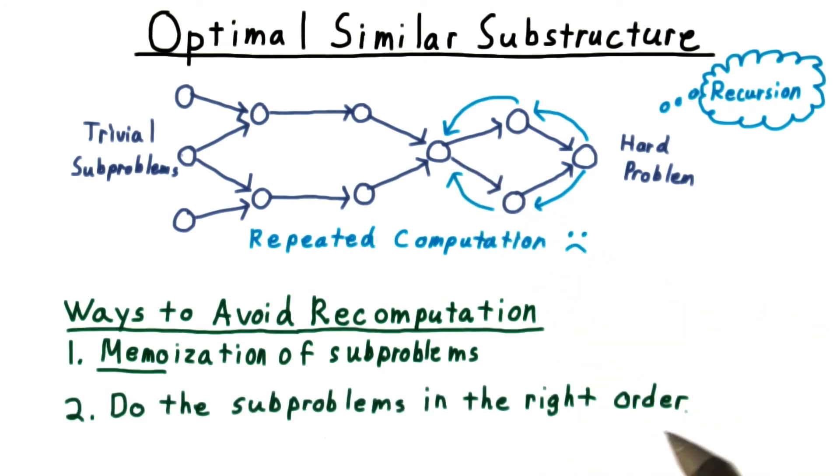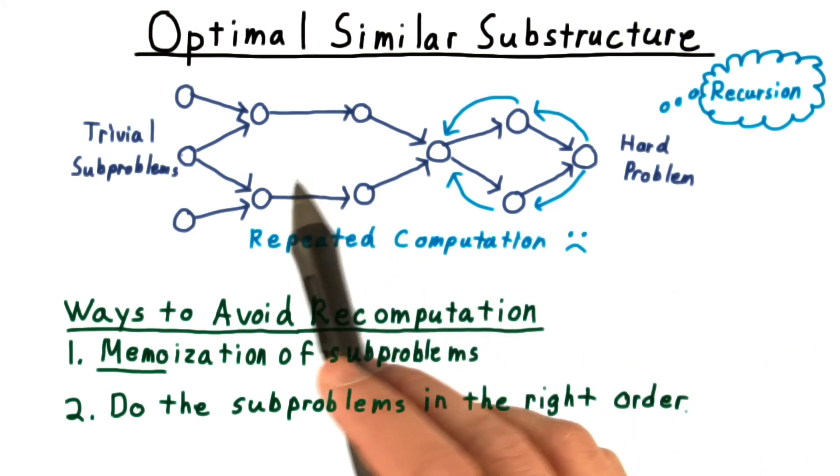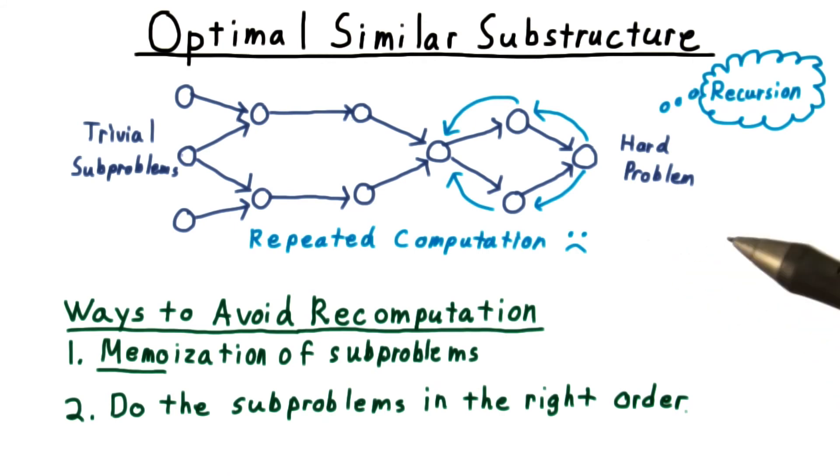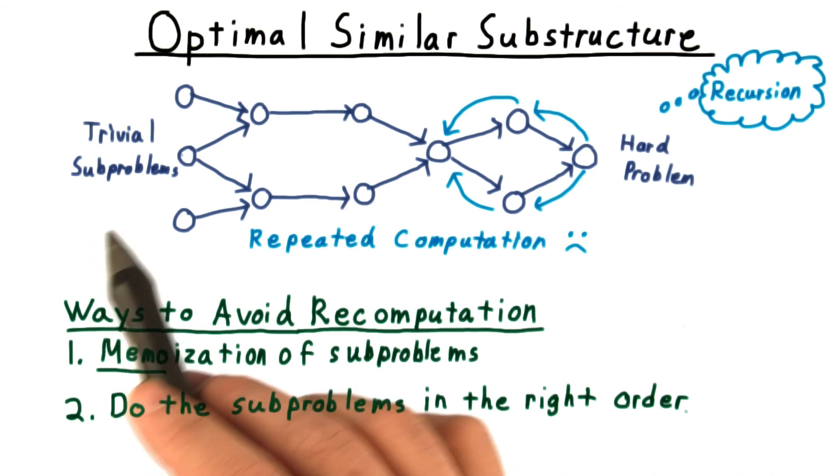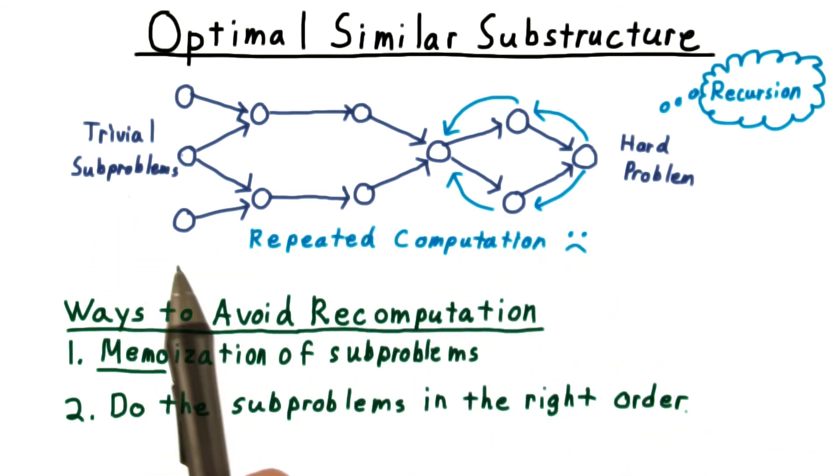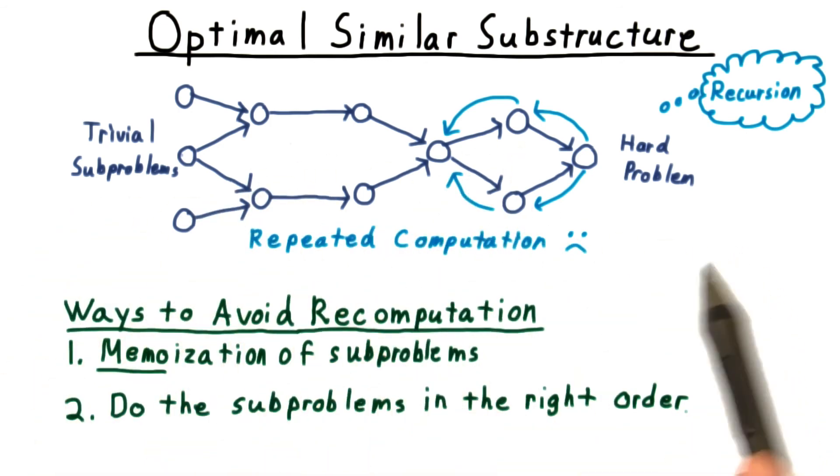Alternatively, we can solve the subproblems in the right order, so that anytime we want to solve one of the problems, we're sure that we have the answer to its subproblems already. This can always be done because the dependency relationships among the subproblems must form a directed acyclic graph. If there were a cycle, then we would have a circular dependence and the recursion wouldn't work either. So we just find an appropriate ordering of the subproblems so that all the edges go left to right, and then we solve the subproblems in left to right order.